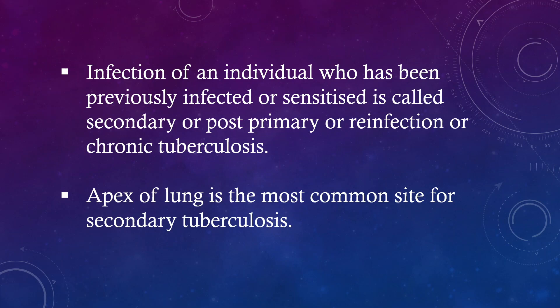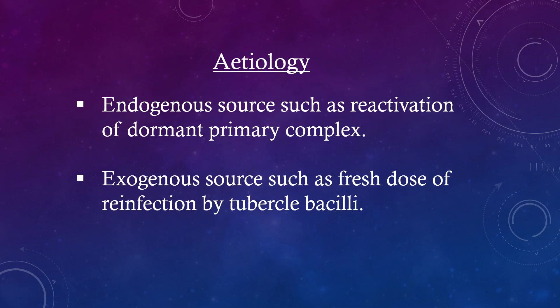Apex of the lung is the most common site for secondary tuberculosis. Etiology: endogenous source such as reactivation of dormant primary complex; exogenous source such as a fresh dose of reinfection by tubercle bacilli.